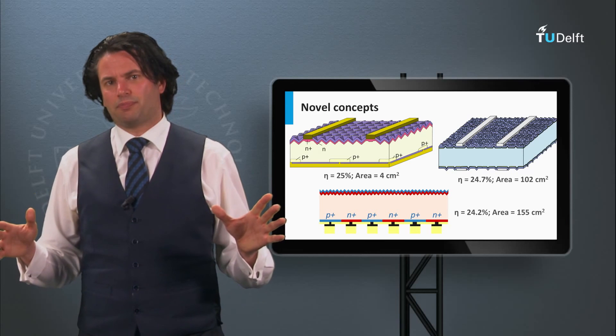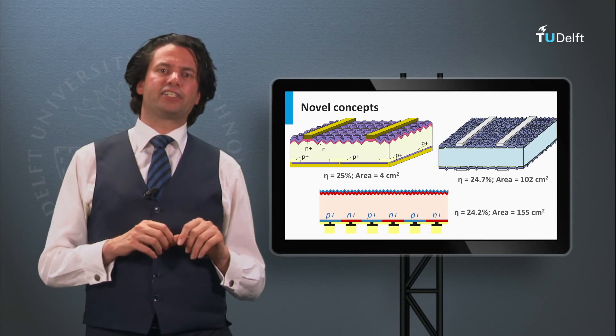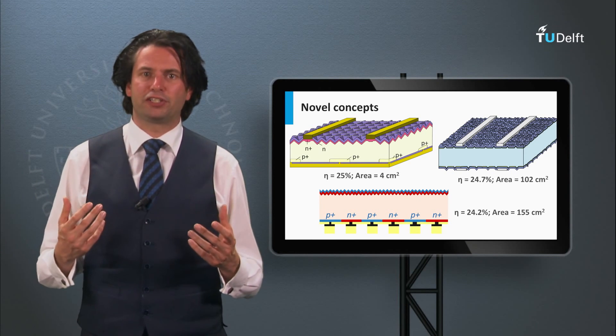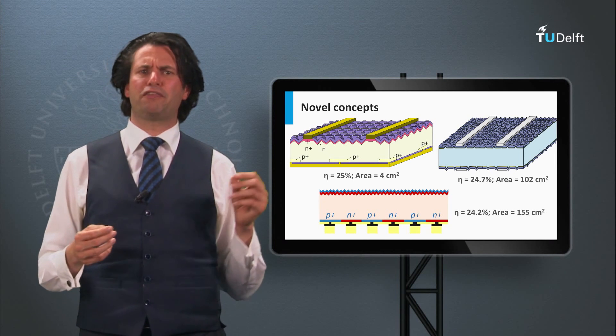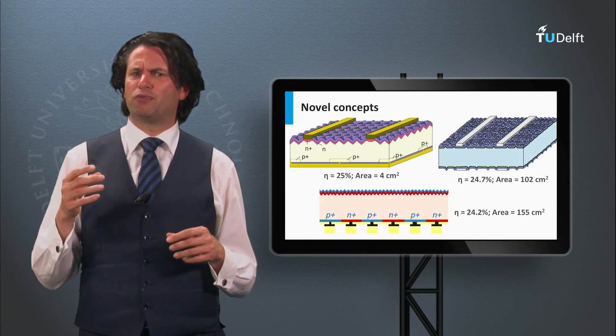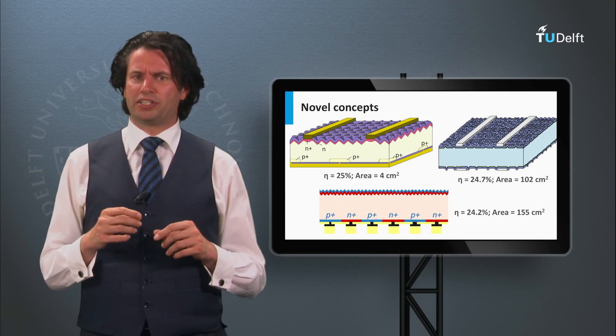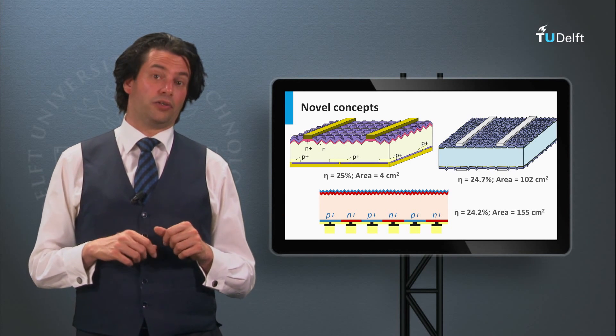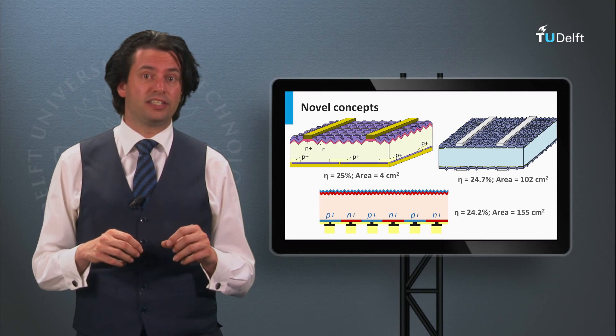Summarized. The high-efficiency crystalline silicon wafer-based solar cells are shown here. The record efficiency of a PEARL solar cell was 25%, however this was a lab-scale solar cell with an area of 4 square centimeters.